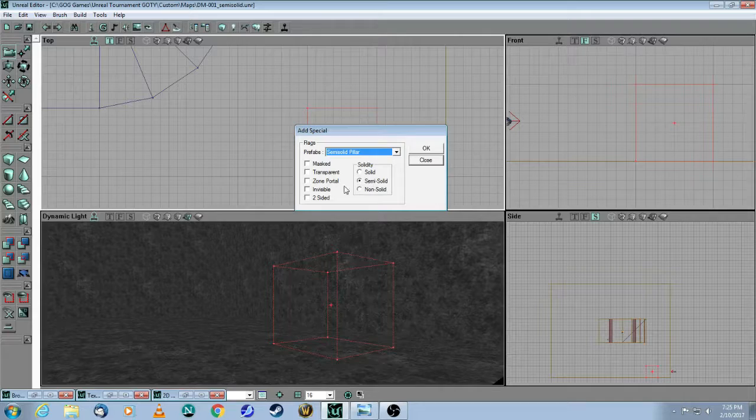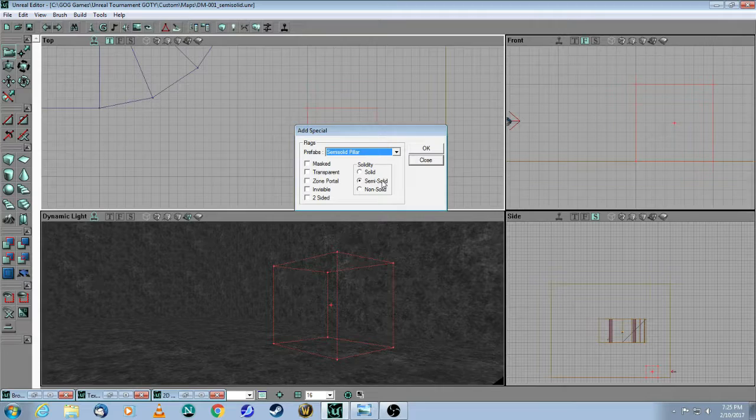you have one pre-selected choice, which is that the brush you make will be semi-solid instead of solid or non-solid. So if I click on OK, there's my brush.